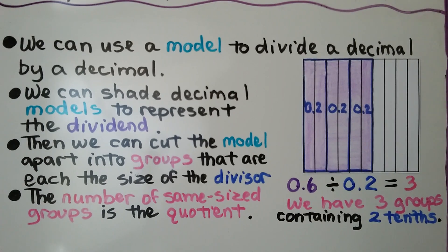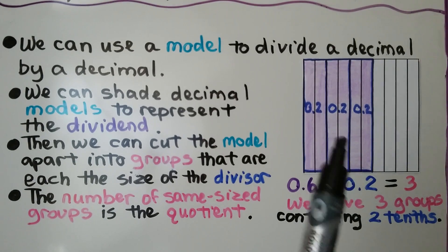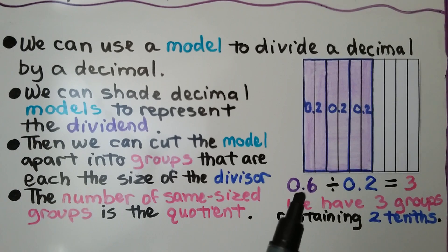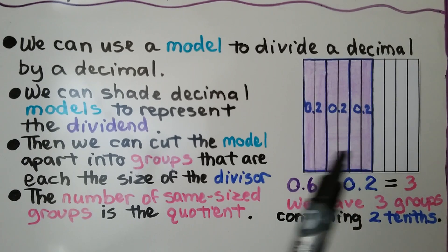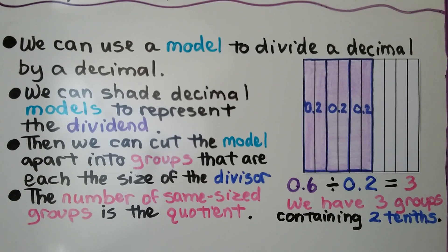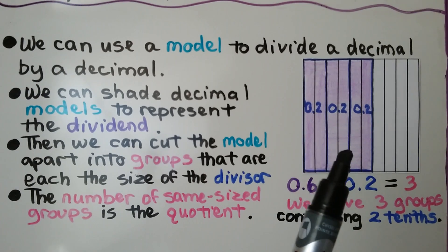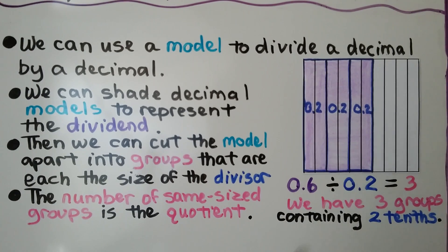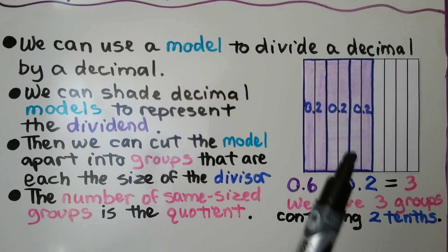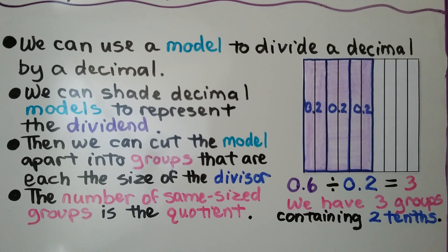We can shade decimal models to represent the dividend. Here we have 6 tenths, so we shade in 6 tenths. Then we can cut the model apart into groups that are each the size of the divisor. The divisor is 2 tenths. We have one group that's 2 tenths, another 2 tenths, and another 2 tenths. The number of same-sized groups is the quotient. We have three groups — it's equal to 3. We have three groups containing 2 tenths.